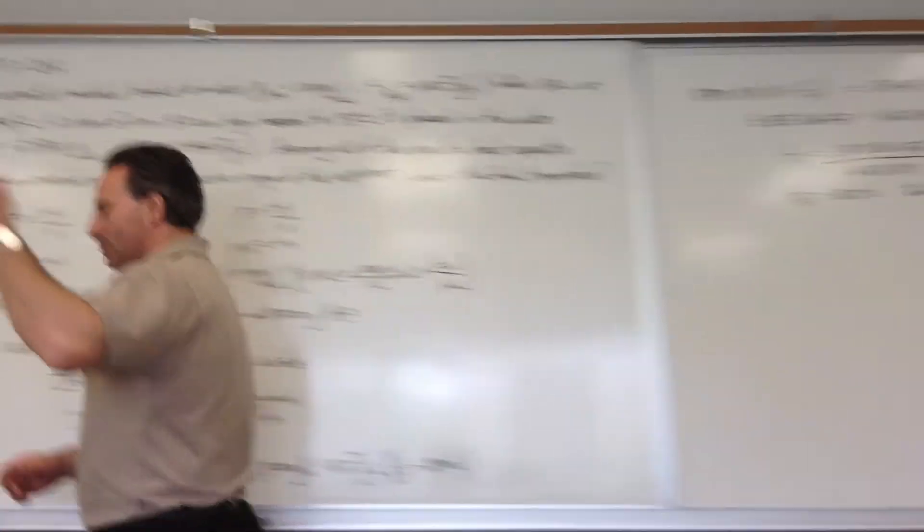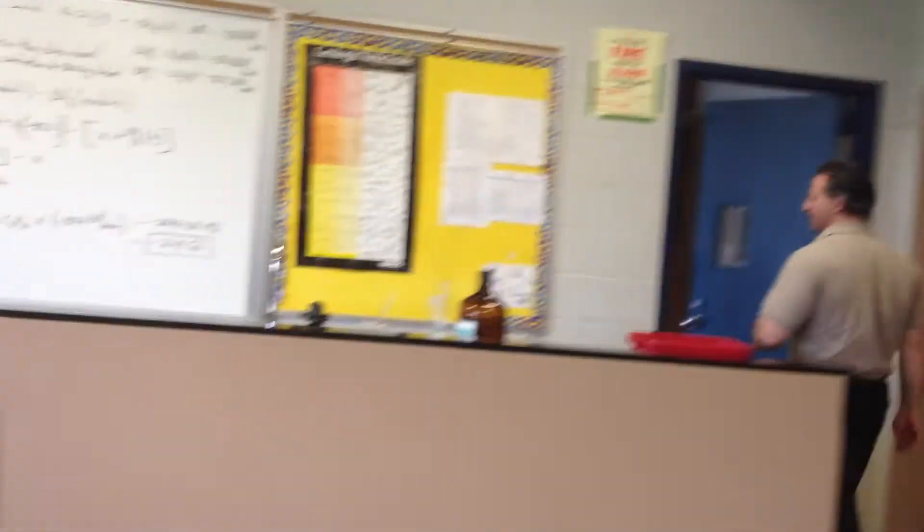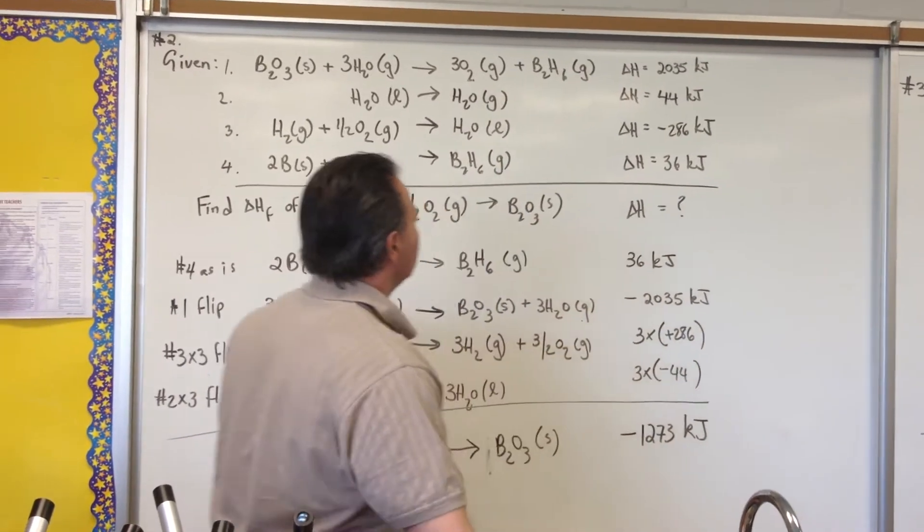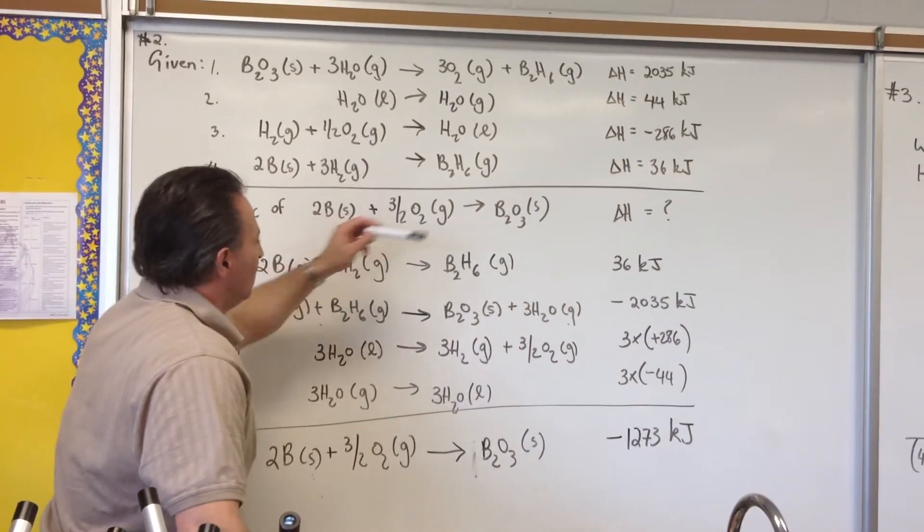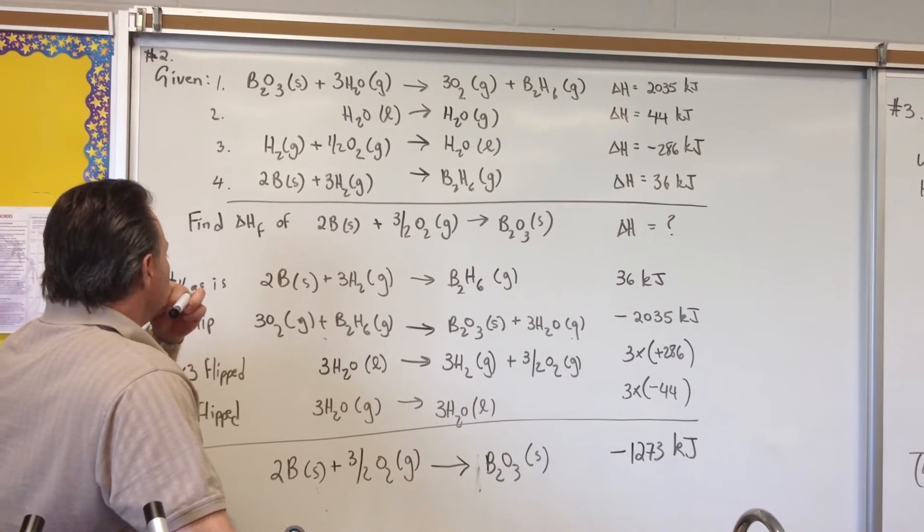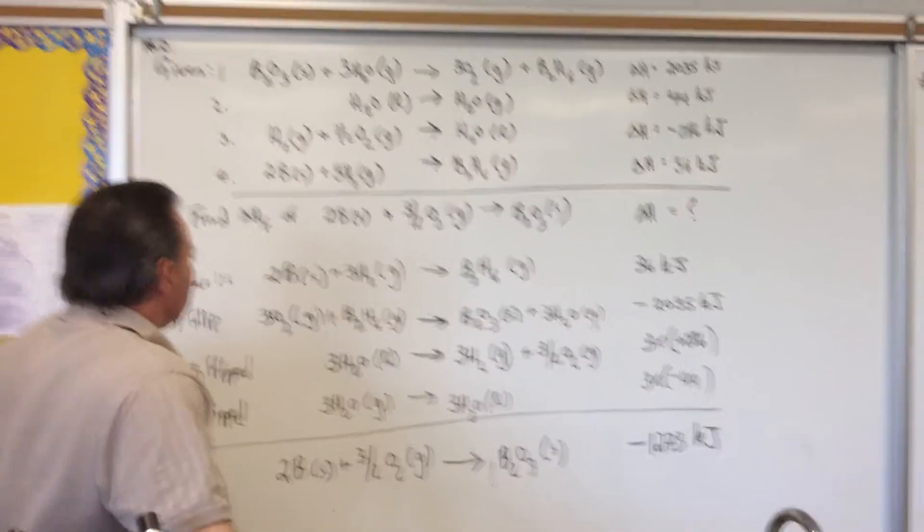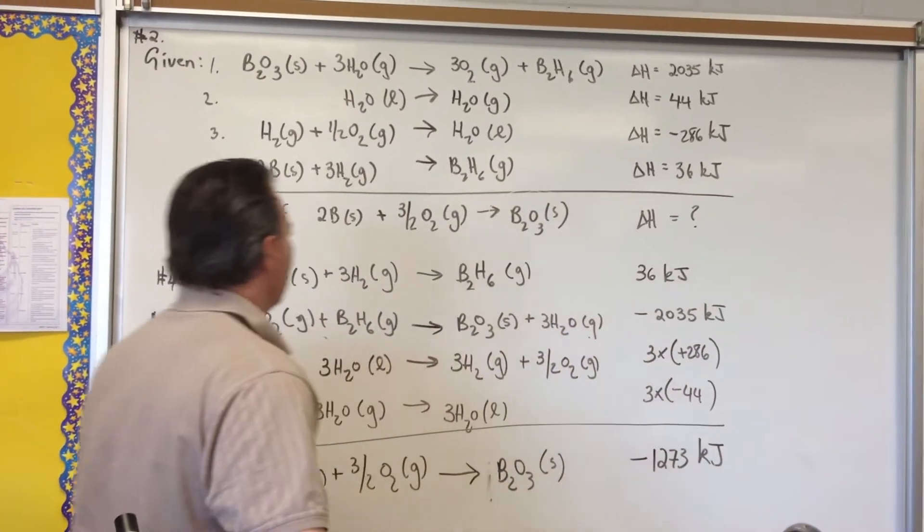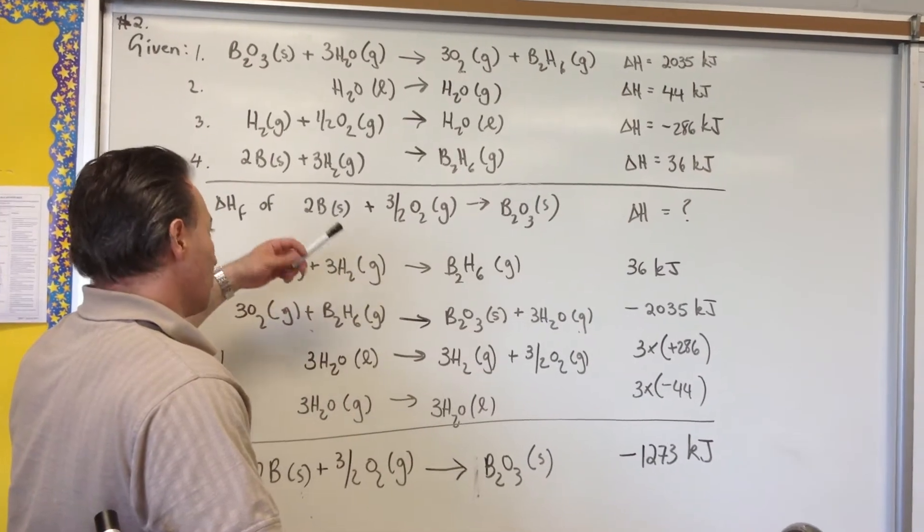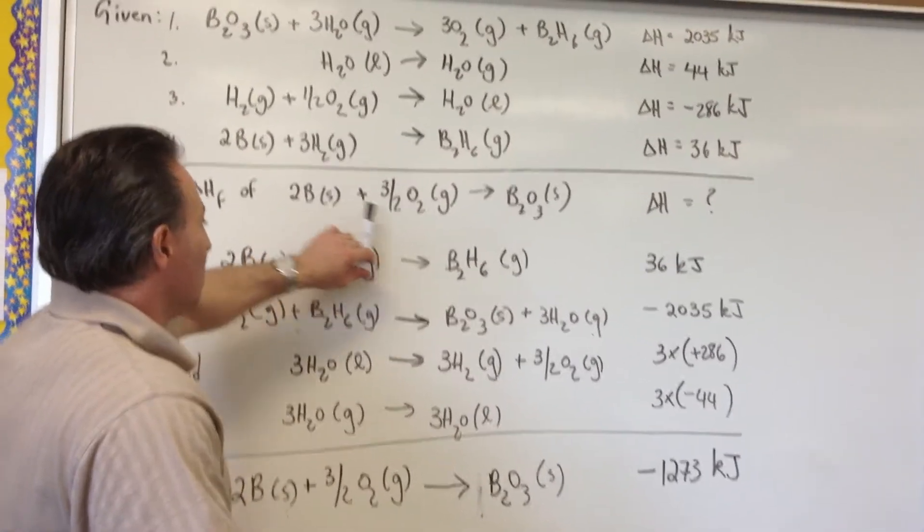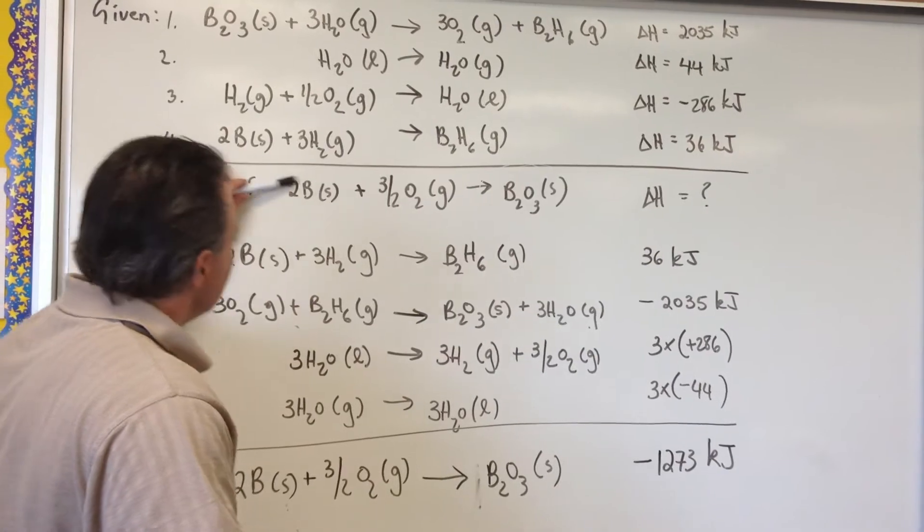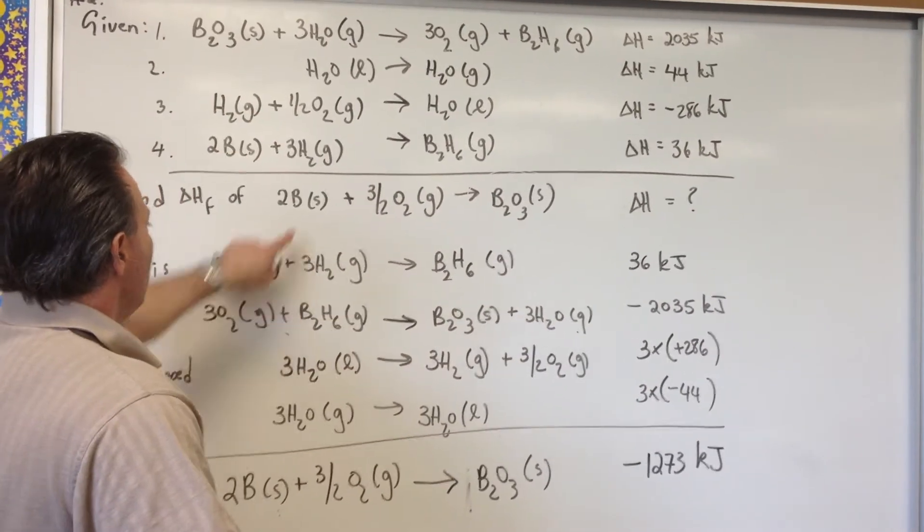The second problem is a problem that requires the use of Hess's Law. We have four equations that are listed, each with their attendant delta H. And here's the delta H formation of diboron trioxide. So we want to find the heat of formation of this substance. Heat of formation means the heat that's released or absorbed when something forms from the elements that compose it.